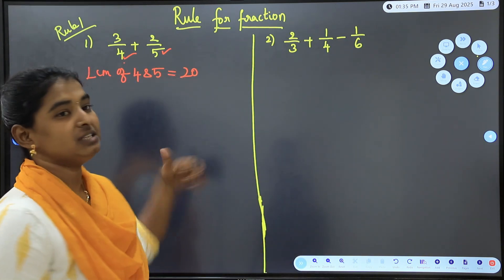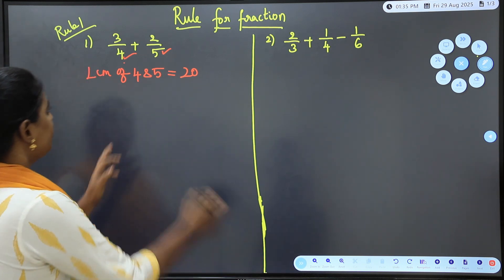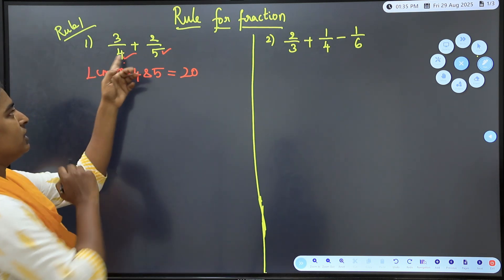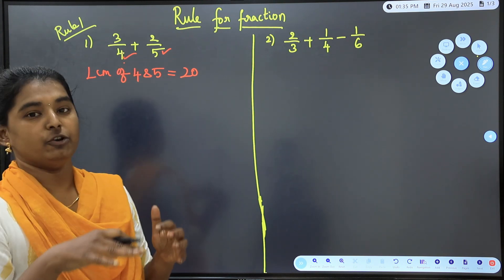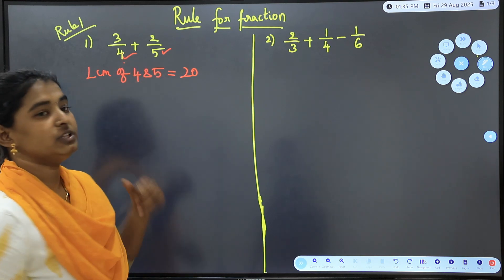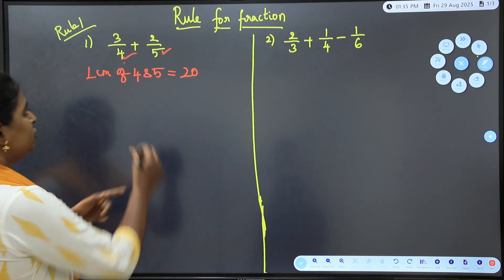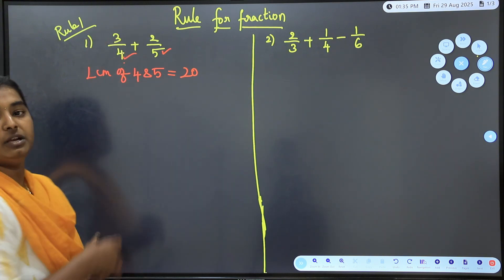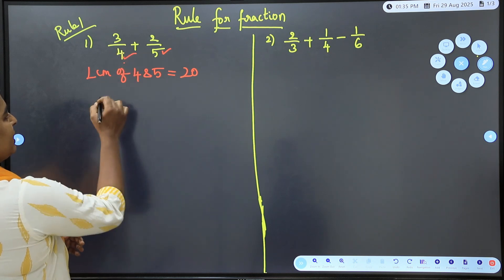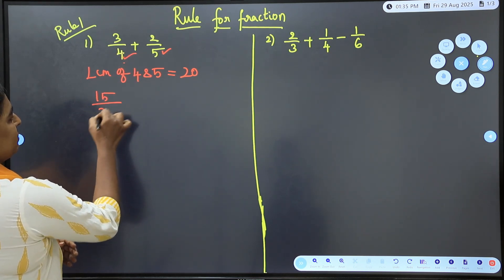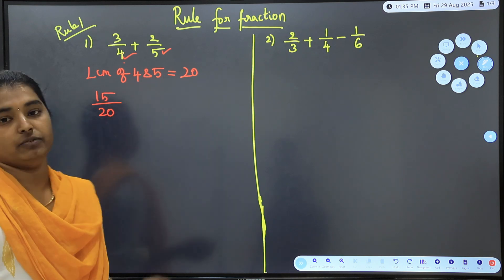Once the denominator is the same, I can add or subtract the numerator. For 3/4, the denominator needs to become 20, so multiply by 5: 4×5=20 and 3×5=15, giving 15/20. For 2/5, multiply by 4: 5×4=20 and 2×4=8, giving 8/20.